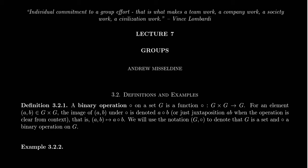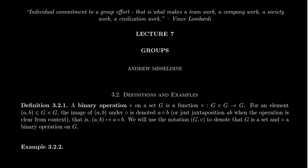Before we define what a group is, I want to first introduce the idea of a binary operation. Algebra is all about studying operations, with binary operations being one of the ones we talk about the most. So if we have some set G — thinking of this as a prototype of what a group is going to be — a binary operation is a function from G cross G to G. Basically, you take two elements of your set G and produce a third element.